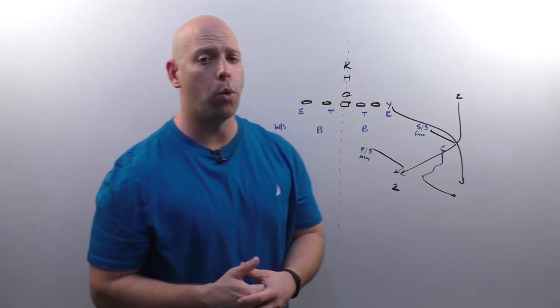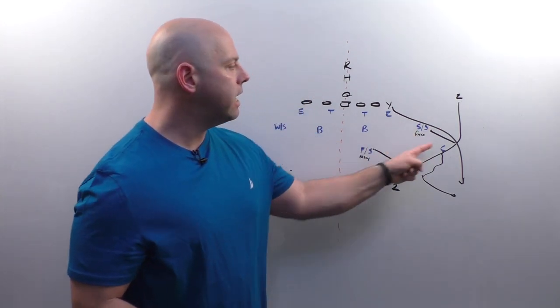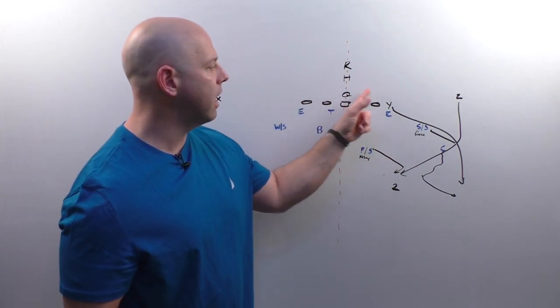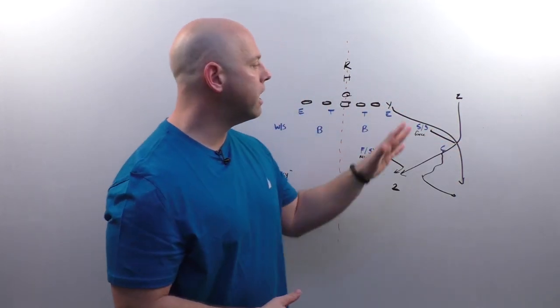I did not want our strong safety to have to run with the wheel. I didn't think that that was the best thing. Now he does still have swing deep three, but I didn't want him running with the wheel. Over here, our weak safety would have to run with a number two on a wheel.